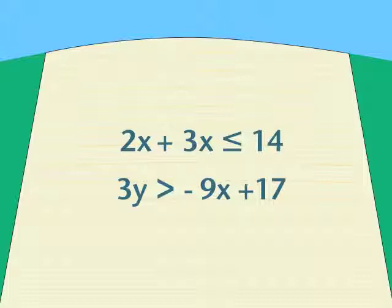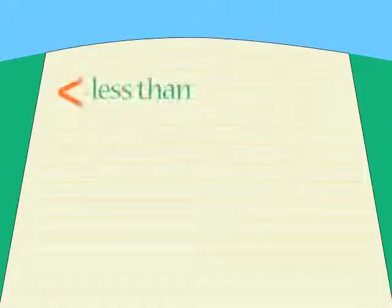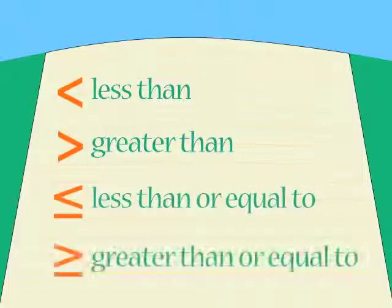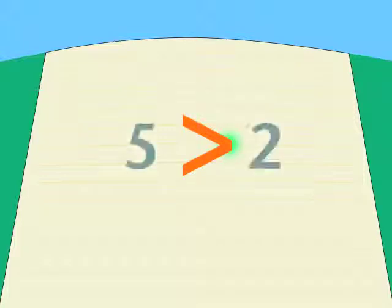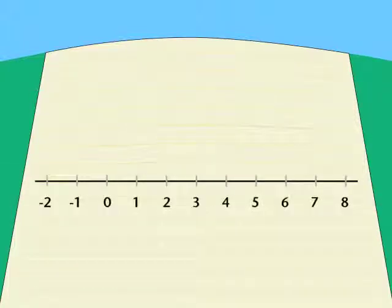First, the signs. There are four of them. And in each case, the point — the smallest end of the sign — is next to the smaller number.